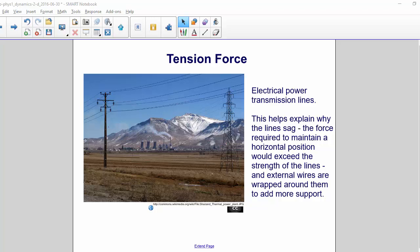How about electrical power transmission lines? This helps explain why the lines sag. The force required to maintain a horizontal position would exceed the strength of the lines. And external wires are wrapped around them to add more support.